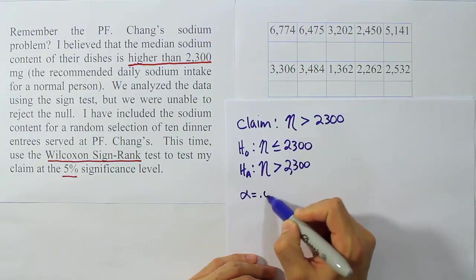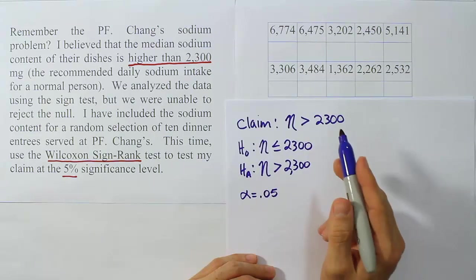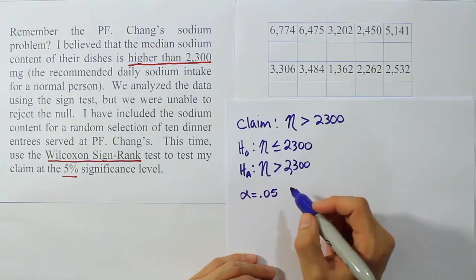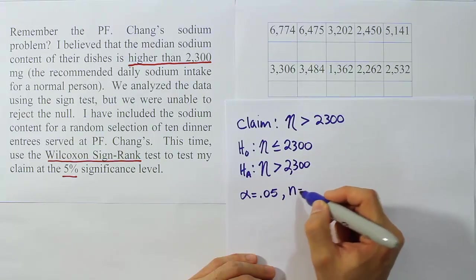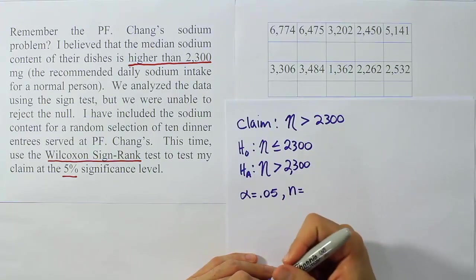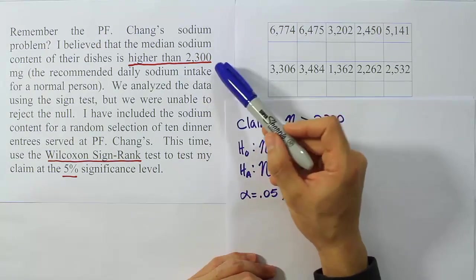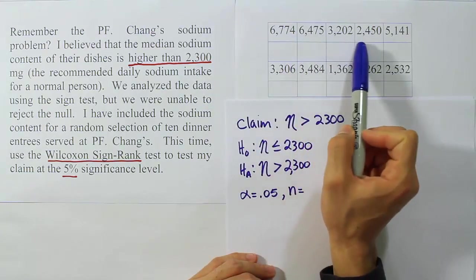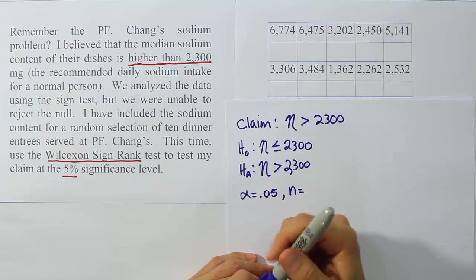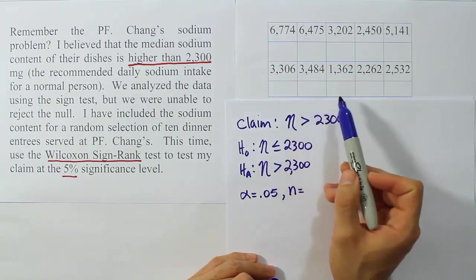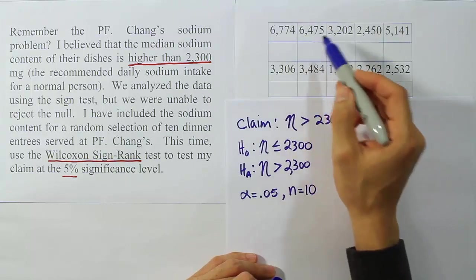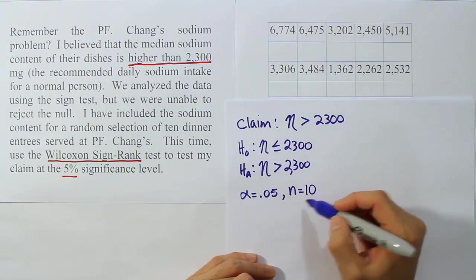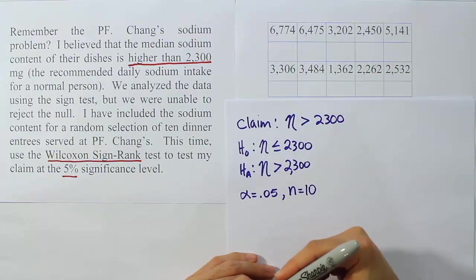We're still going to need to know what n is. Just like before, we're going to make sure there are no ties. If there are any ties, we have to discard that data value. So here's 2300. Is it tied with any of these values? I don't think so. There are no ties. So we're going to go ahead and say those are our full data set. It looks like there are 10 values if you count those up carefully. That means n is 10.